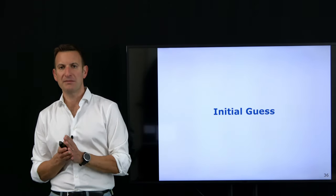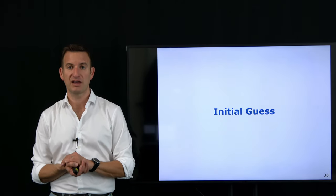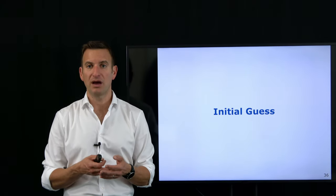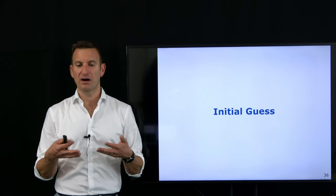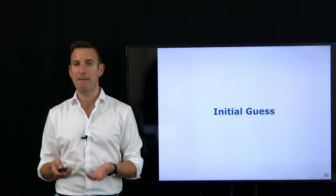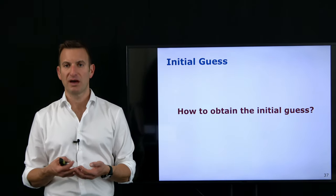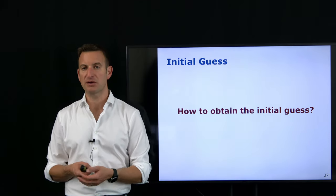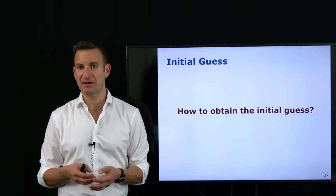Now we come to two further very important things: assumptions that bundle adjustment makes, and the question of how we can actually tackle those assumptions. The first thing is the initial guess — my initial configuration. As with all nonlinear least squares approaches, we need an initial guess: an initial configuration of the 3D locations of points and our camera orientations. The question is how do I get that initial guess? If I'm very far from the true solution, the system is unlikely to converge.